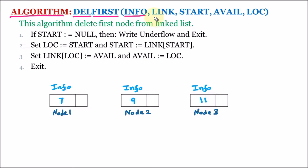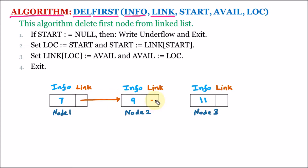The second part of every node is the link part. The link part contains the address of the next node. So node 1's link part contains the address of node 2, node 2's link part contains the address of node 3, and node 3's link part contains null. Null signifies no further node is available.